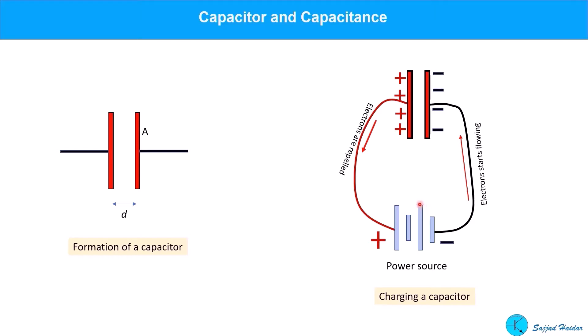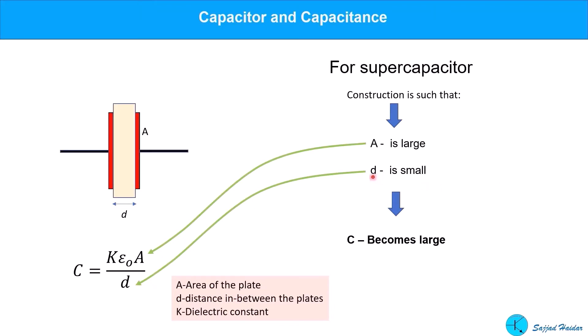Now, if the battery is removed, the charge is stored there, and this is how a capacitor is charged. The capacitance, that is how much charge a capacitor can hold, can be expressed by the equation C equals K epsilon naught A by D.